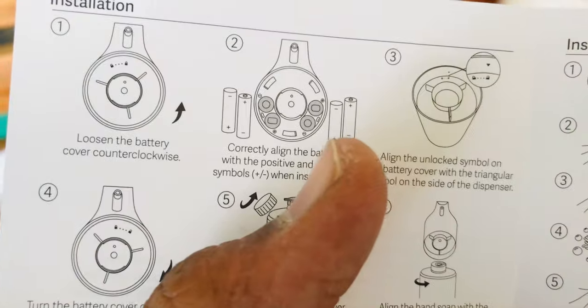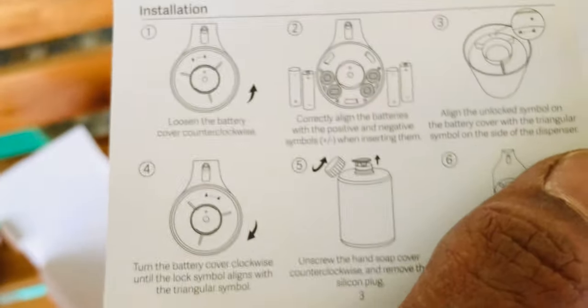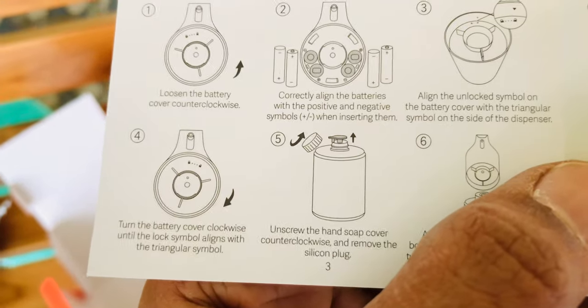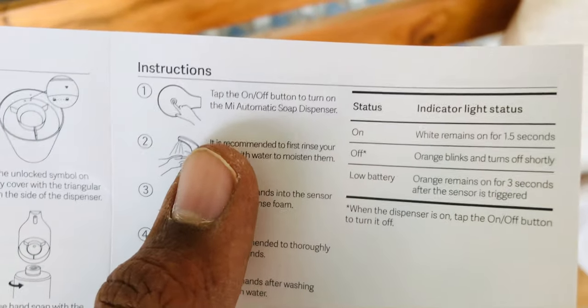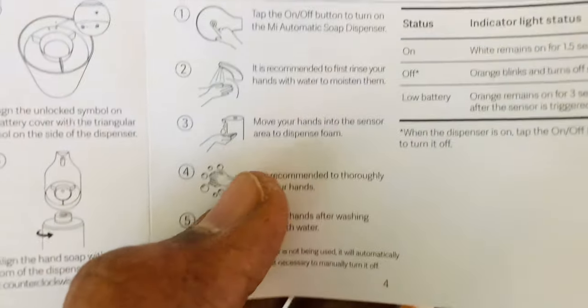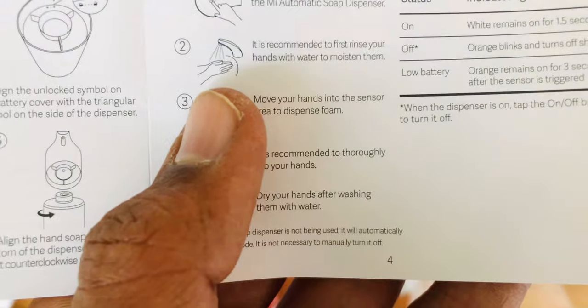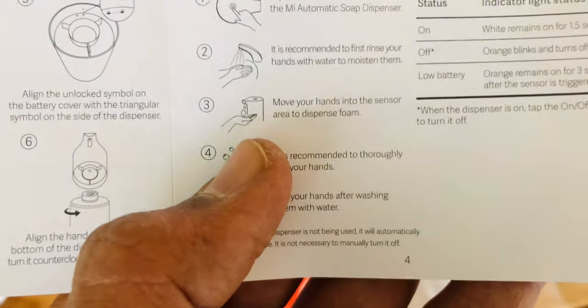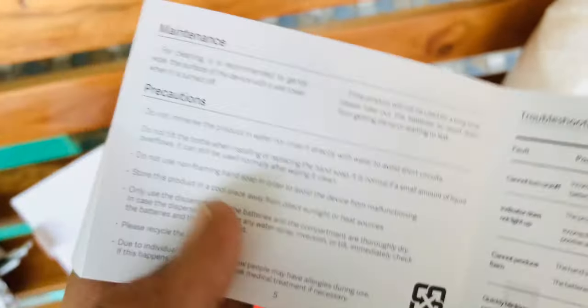The usage instructions say to tap the on button to turn it on, and the off button to turn it off. After that, clean your hands with water from the tap, then use this soap, clean again, and use a towel. These are the normal steps - nothing new here.